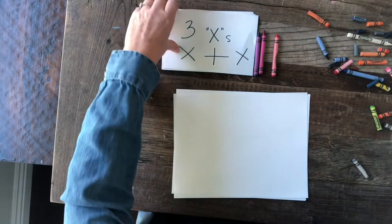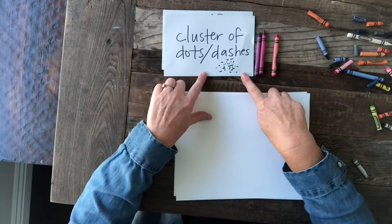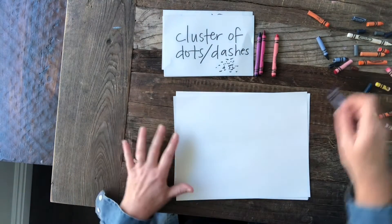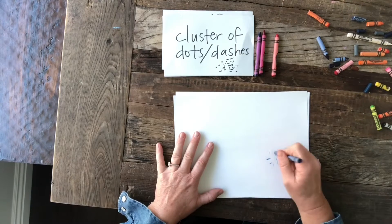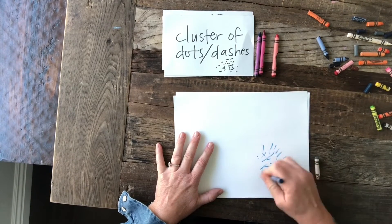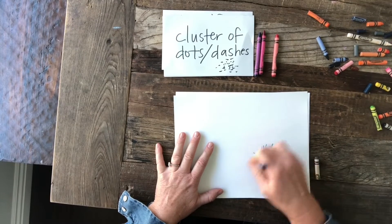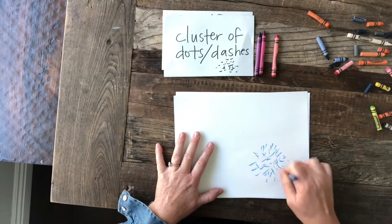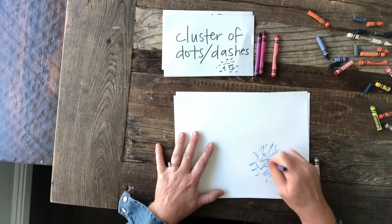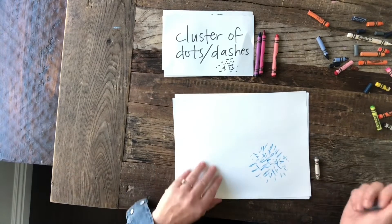Next thing to add is a cluster of dots or dashes — just a bunch of little lines all kind of close to each other, almost like a firework going off. They can be different sizes and different directions.